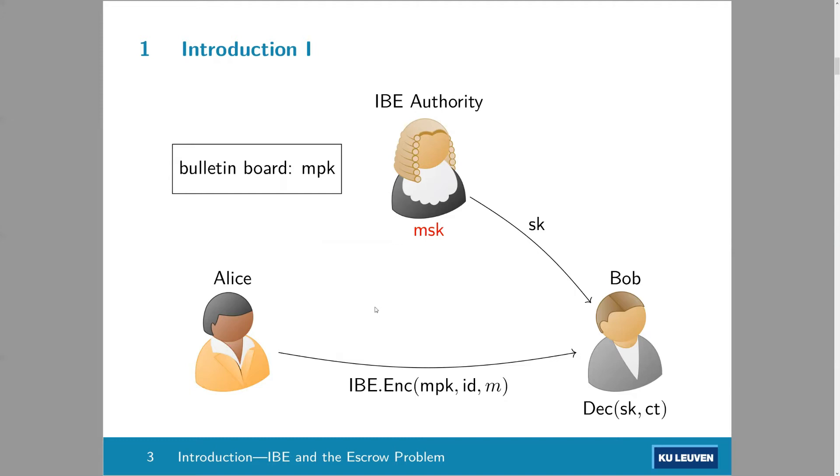Here is the scenario of IBE or identity-based encryption. We have a few different parties. The first is the IBE authority, who has a master secret key that must be kept secret, and a corresponding master public key that he puts on some bulletin board. And to encrypt, basically, Alice will always be the encryptor. So if Alice wants to encrypt a message to Bob, she basically takes the master public key, and then she uses the identity of Bob and whatever message she wants to send. So just with the identity and the master public key, she can make a ciphertext. And Bob, if Bob wants to decrypt the ciphertext, he actually needs a secret key from this authority. And only with that, he can decrypt.